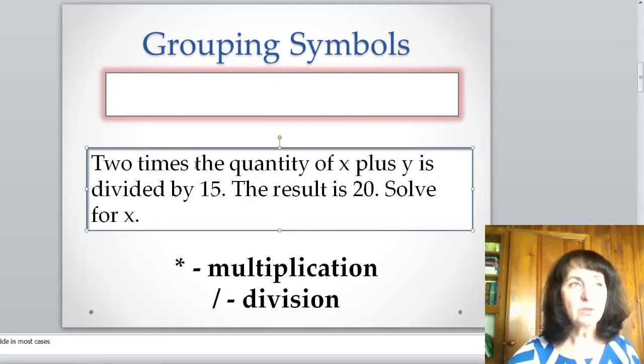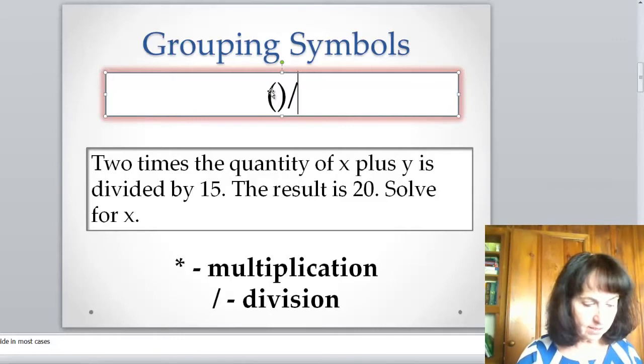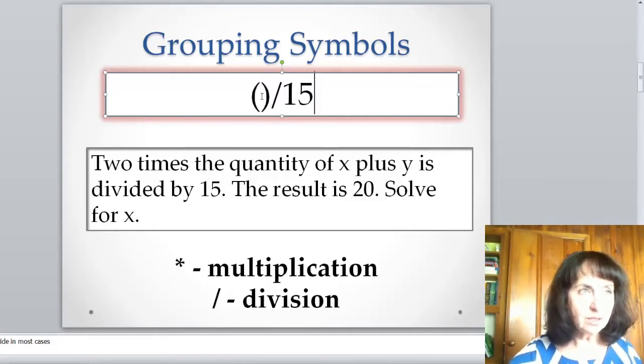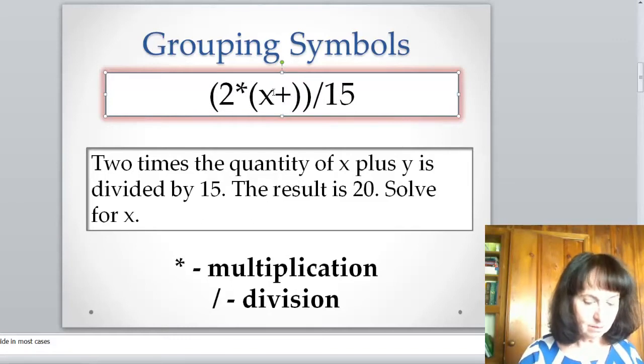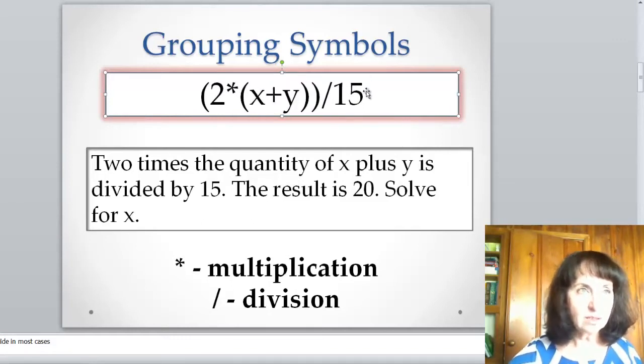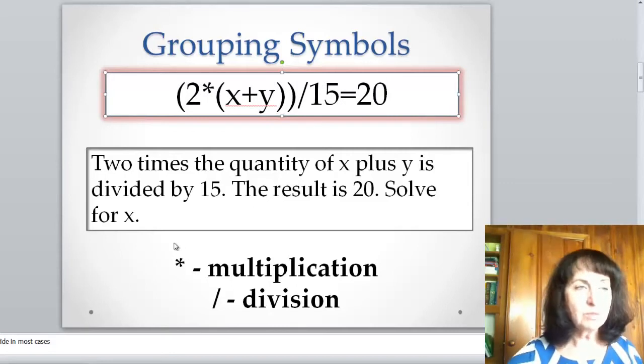So what it asks is 2 times the quantity of x plus y is divided by 15. Let's do it without Equation Editor. So I have some quantity divided by 15. Within the parentheses, this quantity is 2 times another quantity x plus y, and all this is equal to 20.